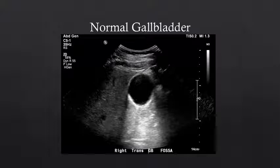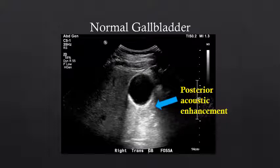Now let's look at the gallbladder. As we've described on previous podcasts, the gallbladder is a fluid-filled structure. It rests in the gallbladder fossa between the right and left hemi liver and tends to show posterior acoustic enhancement. The posterior acoustic enhancement occurs because sound waves pass relatively unimpeded through the fluid within the gallbladder and therefore have a higher amplitude when they hit the soft tissue deep to the gallbladder. Also note the gallbladder wall is a single-layer hyperechoic wall, and its thickness should be less than three millimeters.